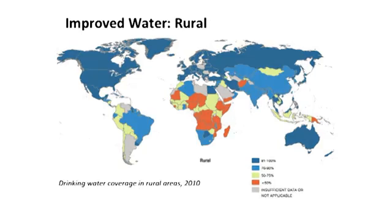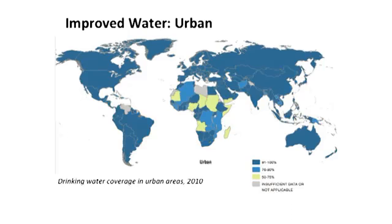This next map shows improved water coverage just in rural areas, and this picture doesn't look as promising. Sub-Saharan Africa still stands out as having poor coverage, but now we can see that there are many rural households in India, China, and Latin America that still do not have improved water supplies. The next slide shows improved water coverage just in urban areas, and urban areas actually look considerably better than rural areas, though cities in sub-Saharan Africa still have a ways to go.